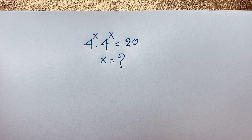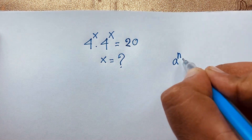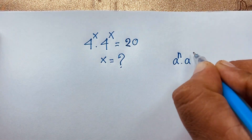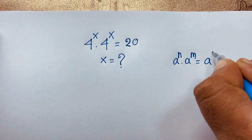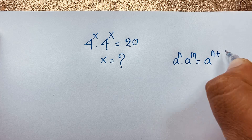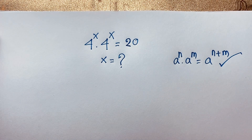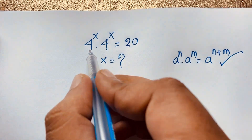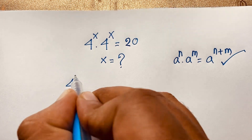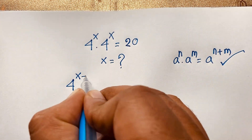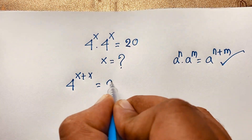First of all, we know that a to the power n times a to the power m equals a to the power n plus m. According to this exponential law, this expression is basically the same, so it will be 4 to the power x plus x is equal to 20.